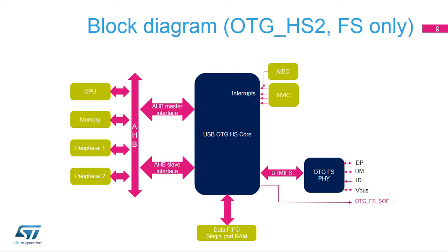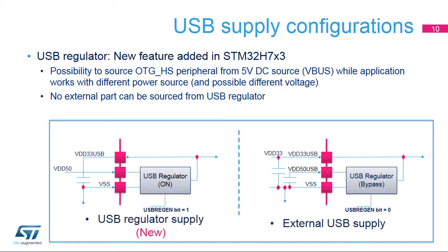Depending on the use case, either device-only or OTG device, a low- or high-speed crystal oscillator is necessary to provide an accurate timing reference for the USB block. The voltage regulator dedicated for OTG peripherals is a new feature of the STM32H7 family. Using this regulator, only an OTG peripheral can be sourced. Other internal or external functions cannot be connected to pin VDD33 USB. This allows the peripheral to be powered directly from VBUS without any additional components and using a different voltage level for MCU VDD.